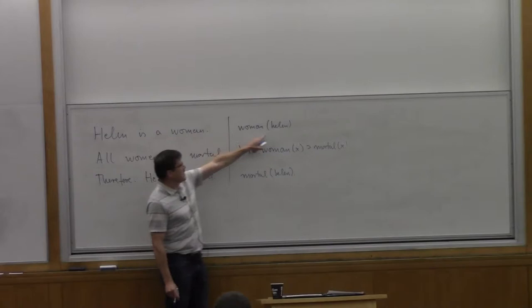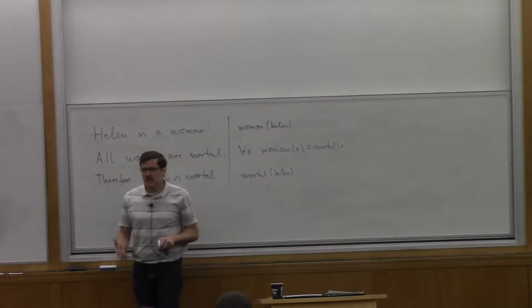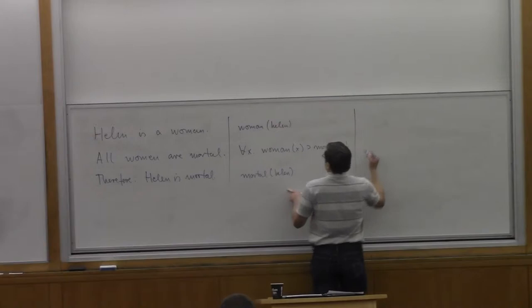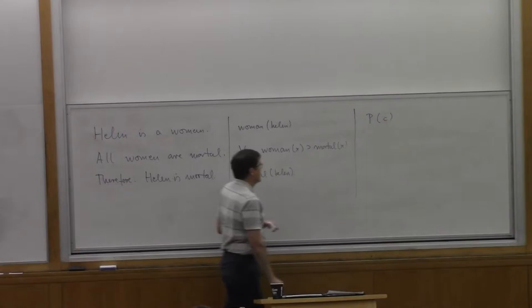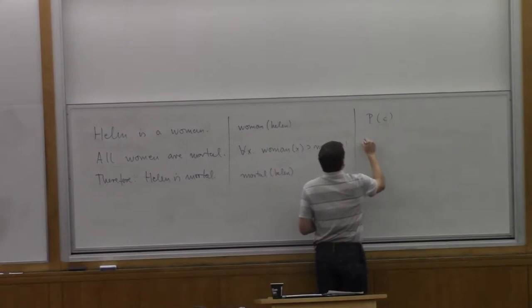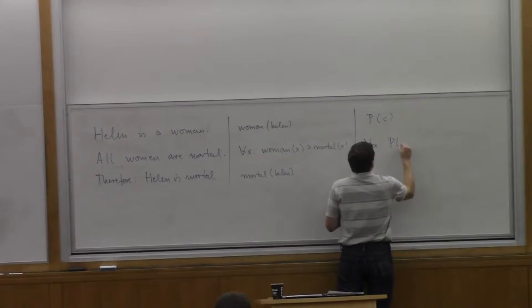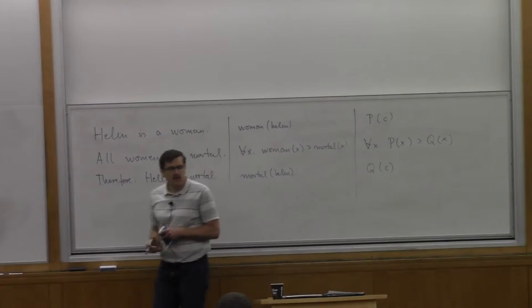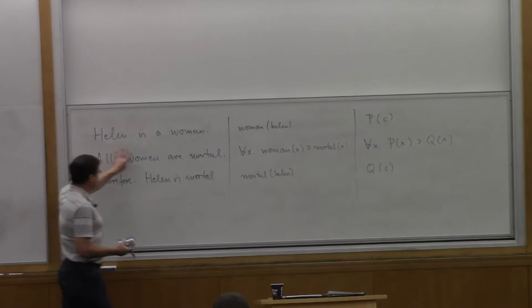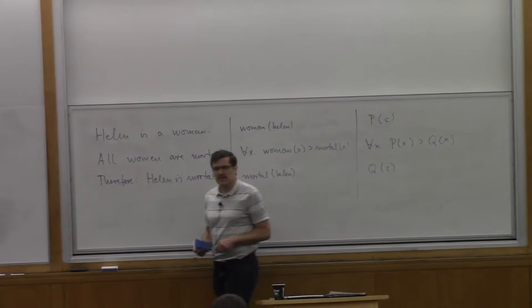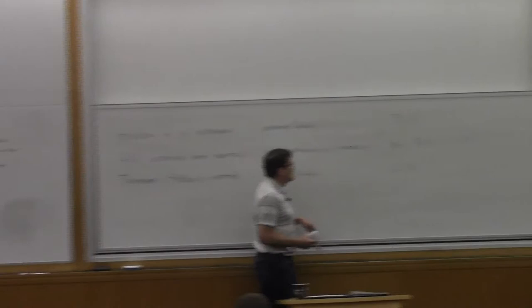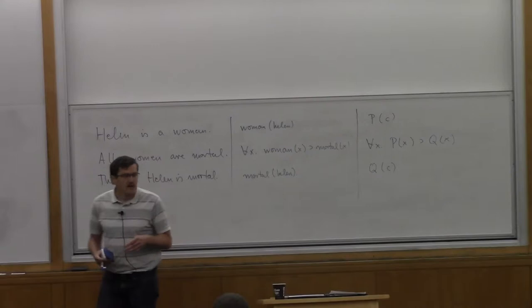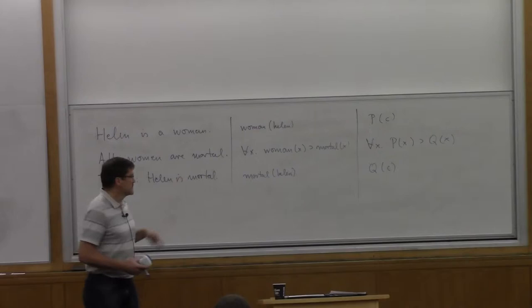For example, woman of Helen. Then all women are mortal - I would say for every X, if X is a woman, that implies that X is mortal. And then here I would conclude mortal of Helen. So now I've translated these informal linguistic statements in natural language into a formal language. But I haven't really reached logic yet, because this still talks about Helen of Troy. I've introduced some logical symbols, but I'm still talking about very concrete objects. What I really study in logic is the following question: If I have some proposition P of some constant C, and here I say that for every X, if P of X implies Q of X, can I conclude that Q holds of the constant C?